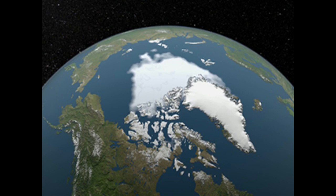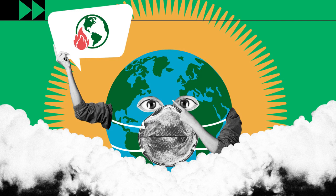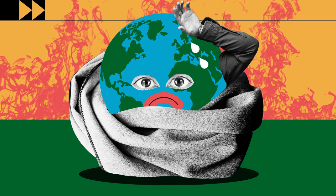Climate change refers to long-term shifts in temperatures and weather patterns. These shifts may be natural, such as through variations in the solar cycle. But since the 1800s, human activities have been the main driver of climate change,